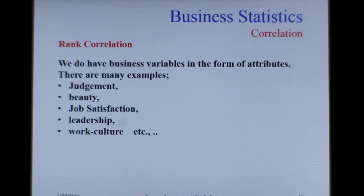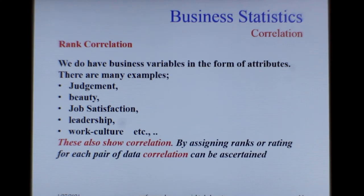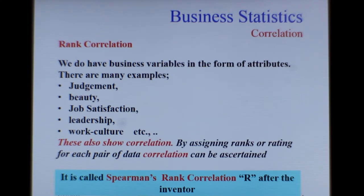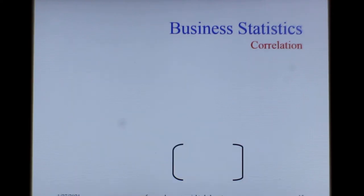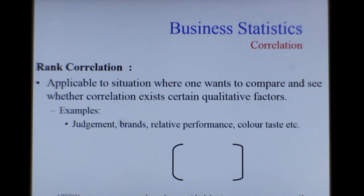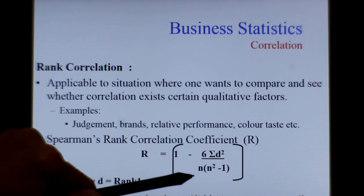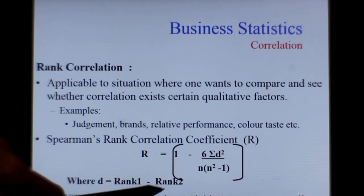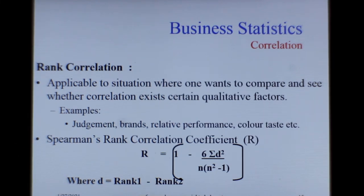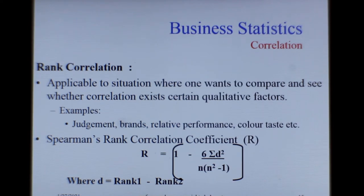These attributes can also definitely show correlation. It is called Spearman's rank correlation, or capital R, after the inventor — the person who identified how to calculate this. The formula for rank correlation is given by 1 minus 6 times sigma d-squared over n times (n-squared minus 1), where d is the difference between rank 1 and rank 2. You have two variables, both are ranked, and then you find the rank difference.